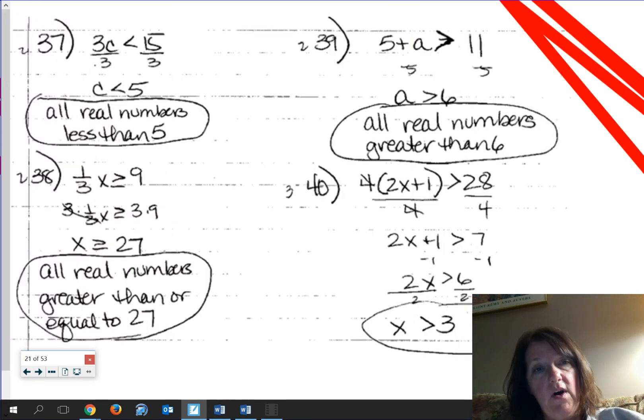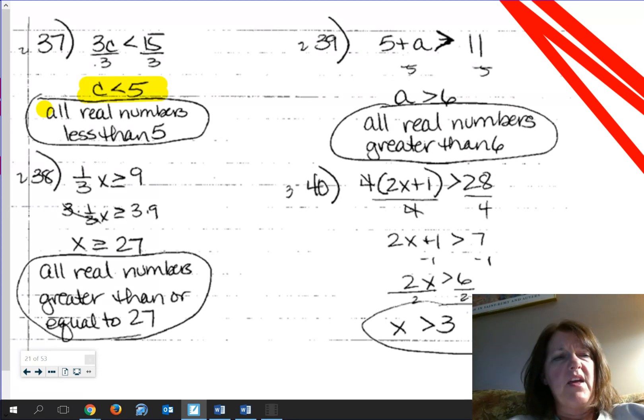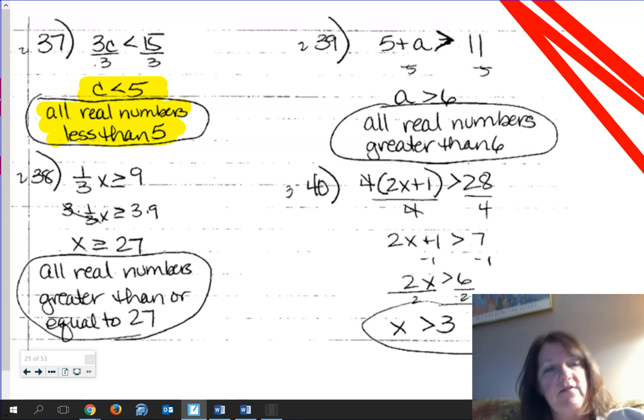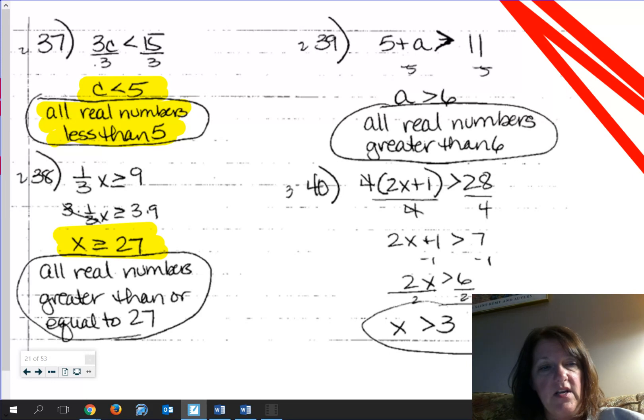These last ones are some inequalities, so remembering what happens. For 37, you solve it. You should get C < 5. Now, they also said, can you describe that in words? Well, just everything smaller than 5. That's all. For number 38, when you solve it, you should get x > 27. So, everything bigger than 27.